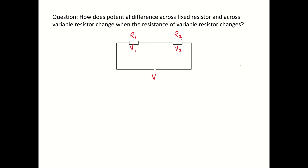We let the current flowing through the circuit be I, so we have: I equals V1 over R1, I equals V2 over R2, and I equals total EMF across the battery over R1 plus R2. We can just add up the resistances because R1 and R2 are connected in series.